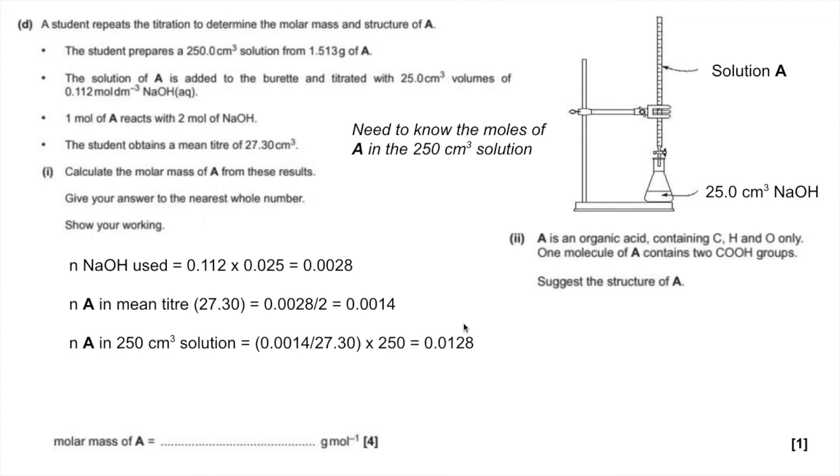We know the mass that was dissolved in there, so mass over moles gives Mr. Mr of A is 118.014, probably more numbers after that, but we have to give it to the nearest whole number, so it's just 118.